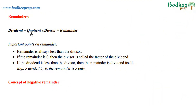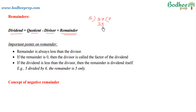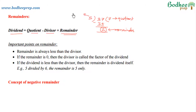Let's start with the topic of remainders. We all know that the dividend is given by divisor into quotient plus the remainder. For example, if I take the number 37 and divide it by 5, we take 7 so that the nearest multiple of 5 to 37 is 35. We take the difference, and if it is less than the divisor, this becomes the remainder — which is 2 here. The number 7 is called the quotient, 5 is the divisor, and 37 is the dividend.